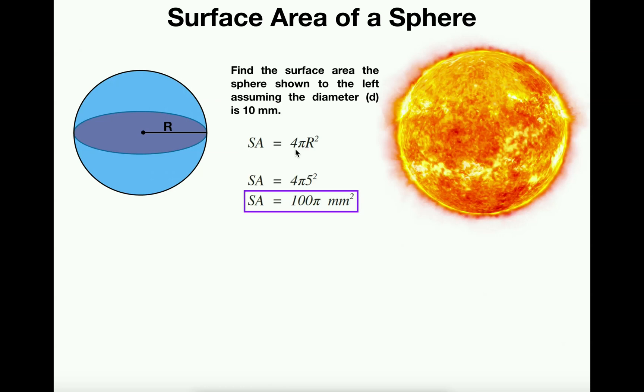However, the surface area is 4πr². So in our example, it's going to be 4 times π times the radius squared, which is 5². From here, it's just basic math.